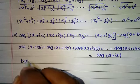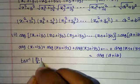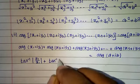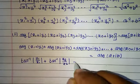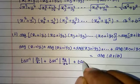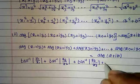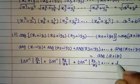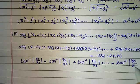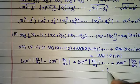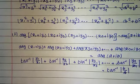plus argument of xn plus iyn equals argument of a plus ib. Finding the argument values: tan inverse of y1 by x1 plus tan inverse of y2 by x2 plus tan inverse of y3 by x3 and so on, plus tan inverse of yn by xn equals tan inverse of b by a.